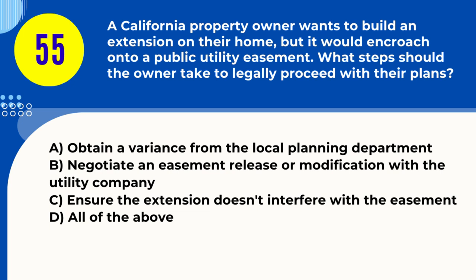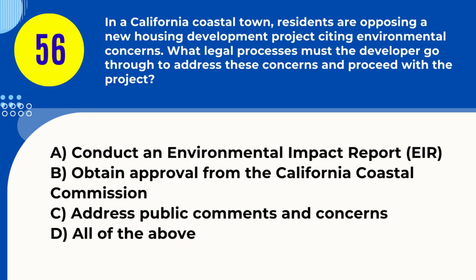Question 55. A California property owner wants to build an extension on their home, but it would encroach onto a public utility easement. What steps should the owner take to legally proceed with their plans? A. Obtain a variance from the local planning department B. Negotiate an easement release or modification with the utility company C. Ensure the extension doesn't interfere with the easement D. All of the above. Answer: D. All of the above. Explanation: Building on an easement requires a variance, negotiating with the utility company, and ensuring no interference.